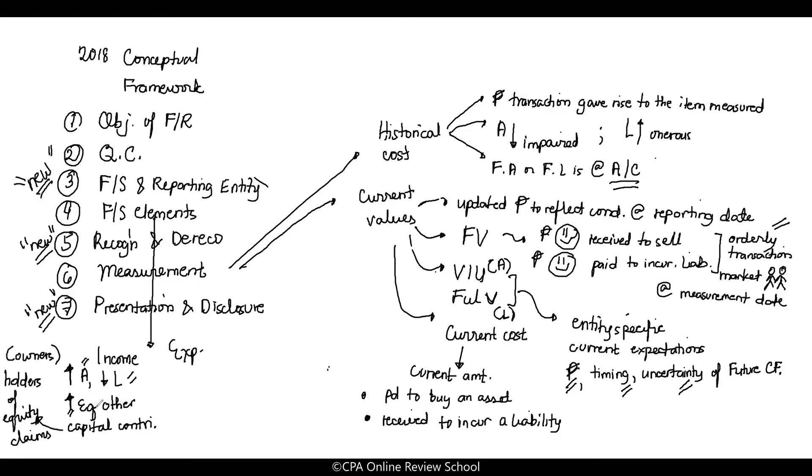And they removed the probable flow of future economic benefits. That's no longer there. Understand? Okay, for expenses, it's the same. Decrease in asset, increase in liability, that results in decrease in equity other than. So there's also an other than.